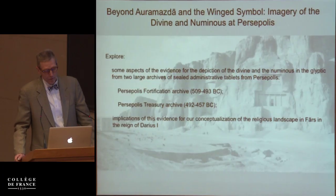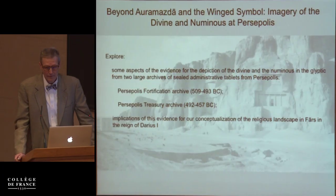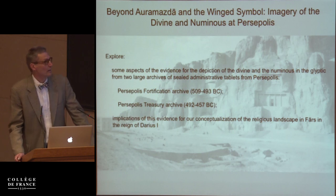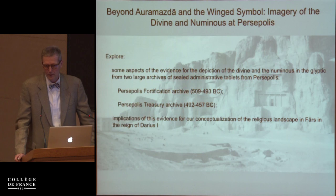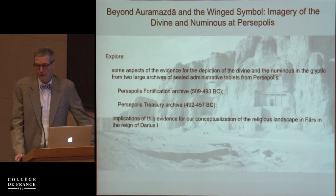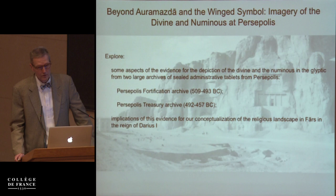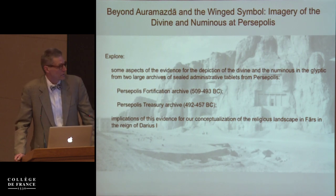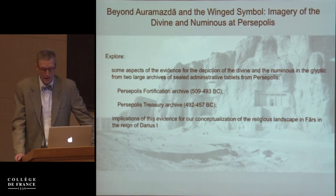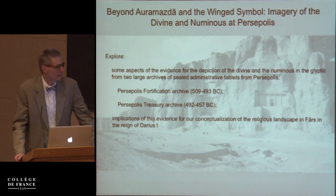What I want to do today in the 30 minutes that I have is to explore some aspects of the evidence for the depiction of the divine and the numinous in the glyptic from two important archives from Persepolis: the Persepolis Fortification Archive, dated to the middle years of the reign of Darius, and the Persepolis Treasury Archive, dated a little bit after that period. And then to say a few words about the implications for our conceptualization of the religious landscape, particularly of Darius I.